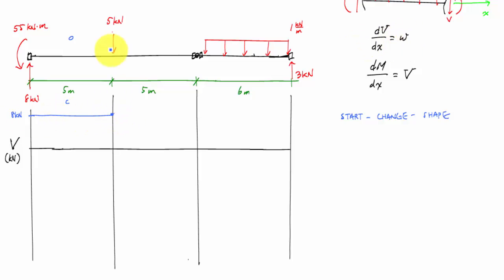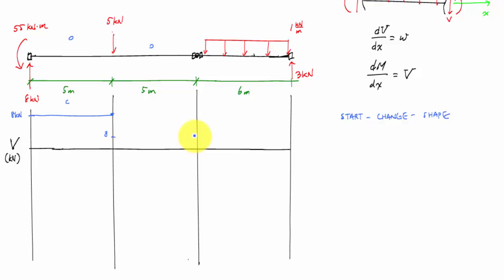Now I hit the next discontinuity — this tells me to go down five kilonewtons because the concentrated force arrow is pointing down. That takes me to three kilonewtons. Again, my loading is zero here, so there's no change from discontinuity to discontinuity, and the shape is a flat line again.